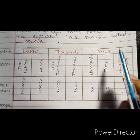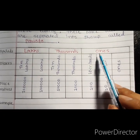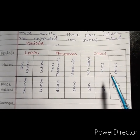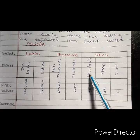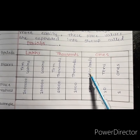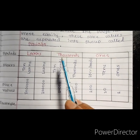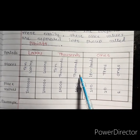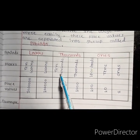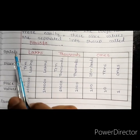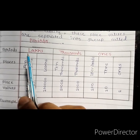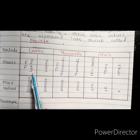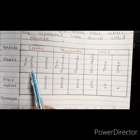So if you start with the Ones period, it has 3 places — that is, Ones, Tens, and Hundreds. Same way, the Thousands period has 2 places: Thousands and Ten-Thousands. And the Lakhs period is also having 2 places: Lakhs and Ten-Lakhs.